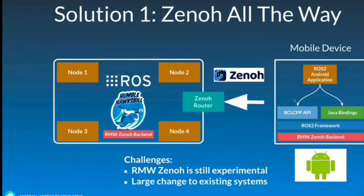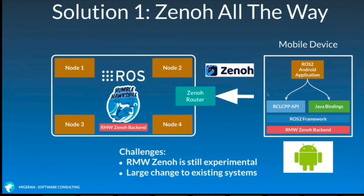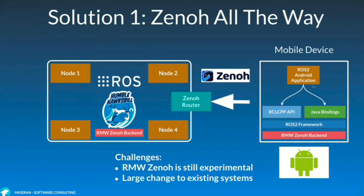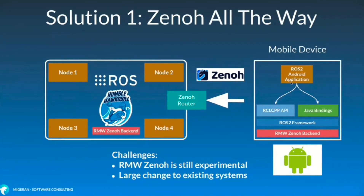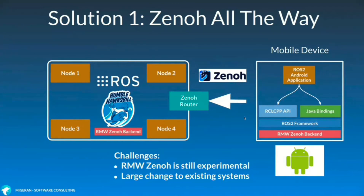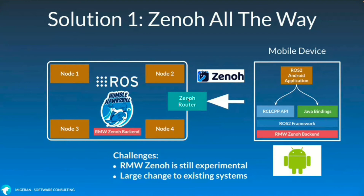The first solution we have come up with is to use the Zenoh backend all the way. On the mobile device, we can use the ROS APIs for the Android application — we can use the Java bindings or the C++ bindings to implement the application. In the backend, we use the Zenoh backend and there is a Zenoh router that will provide the connectivity with the main system, which also uses the Zenoh backend itself. So in this case, we have an end-to-end Zenoh-based solution, but there are some challenges as of right now.